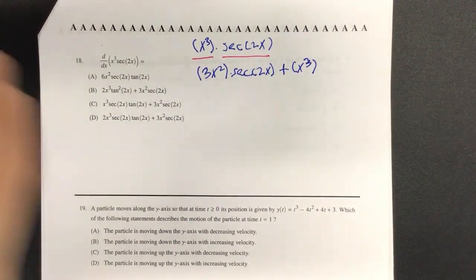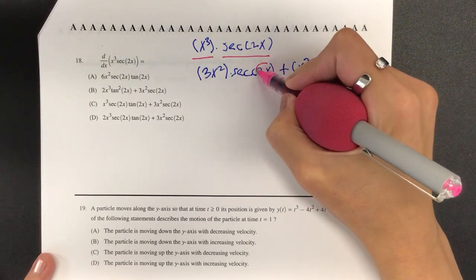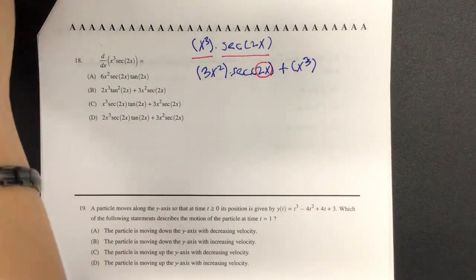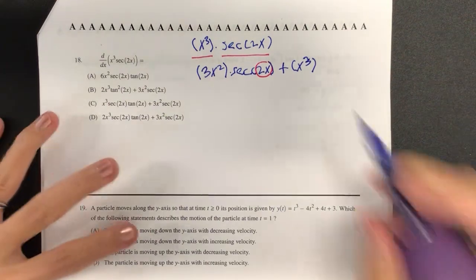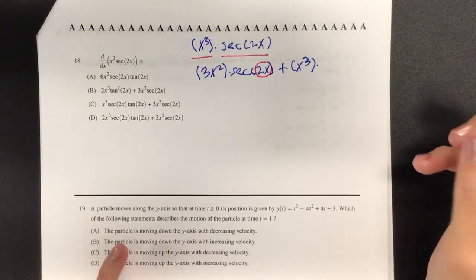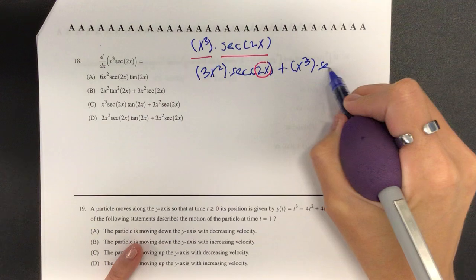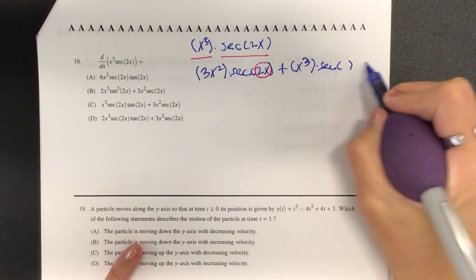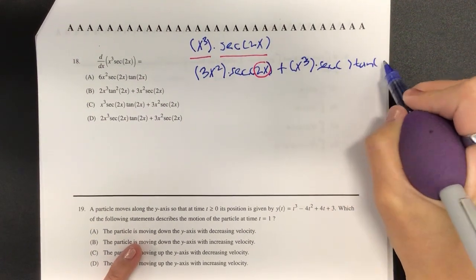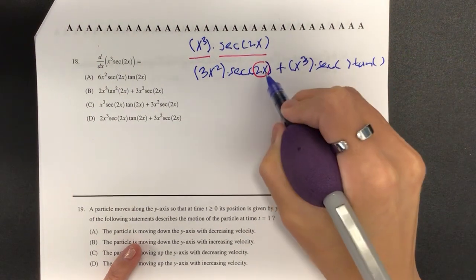And then for the next piece, I am going to circle the chunk that's going to apply the chain rule. So we're not going to mess with that inside. So what was the derivative of secant? Secant tangent. So secant of the argument, tangent of the argument. And that argument is what I had in the inside right here, 2x.